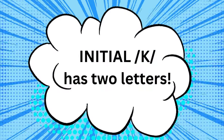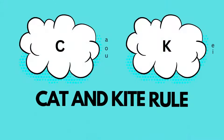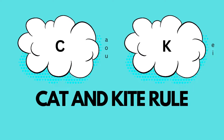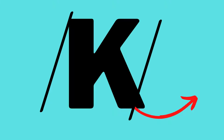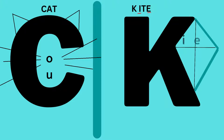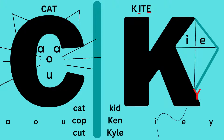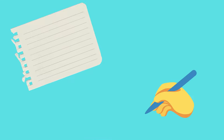Have you ever wondered the rule for when to use C or K? Let's learn the cat and kite rule. When we hear K in the beginning position, we have to figure out the vowel that follows and comes after it. Let's draw a picture to help us remember. Grab a sheet of paper and a writing utensil and split the paper in half.